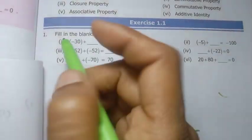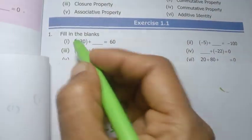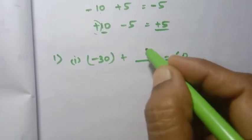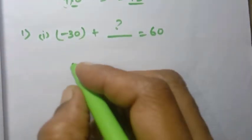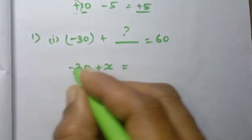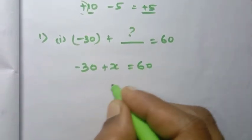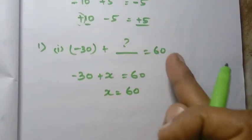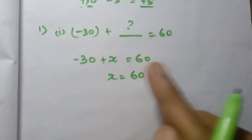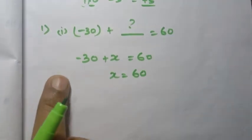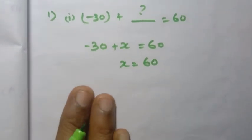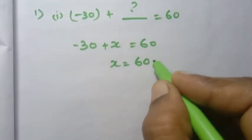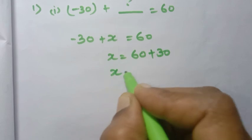Now an easy method. First sum: minus 30 plus some value — the sign here is minus. Plus x equals 60, so x equals 60. Looking at the sign, this is a minus sign.